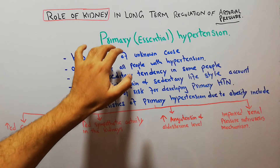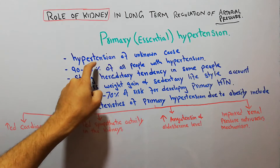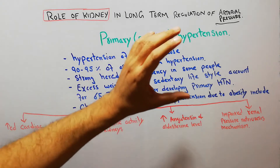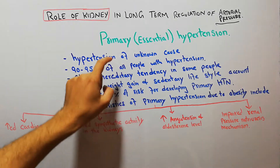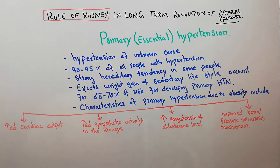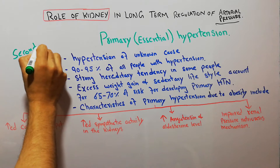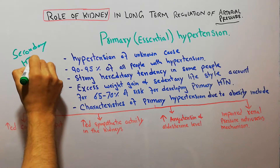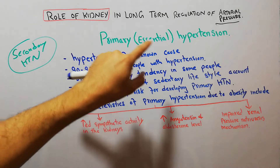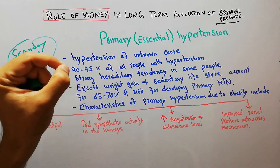Today we are going to discuss primary or essential hypertension, which is also known as hypertension of unknown cause. Because the cause of the hypertension is not known, that's why it is known as primary hypertension. If the cause of hypertension is known, then it is labeled as secondary hypertension. We are going to discuss primary or essential hypertension from a physiology point of view.